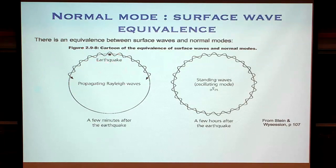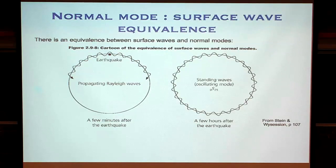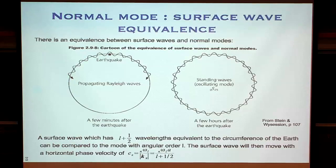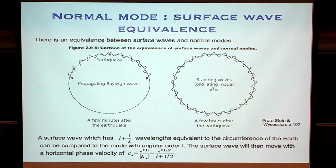Here's how the cartoon version goes: you have an earthquake, propagate your Rayleigh waves around the Earth, and leave the Earth going for a while. Eventually you'll get those waves constructively and destructively interfering — like water waves in a pond — and that can set up a standing wave. Those surface waves are constructively and destructively interfered to set up a standing wave completely analogous to one of those normal modes. In this case we're showing 0S25. There's a simple way you can write how a surface wave will move with a horizontal phase velocity if it's equivalent to a normal mode with a particular frequency and L value.